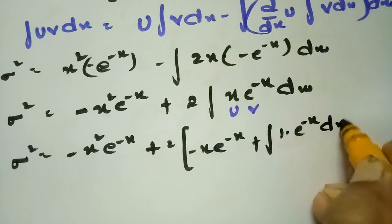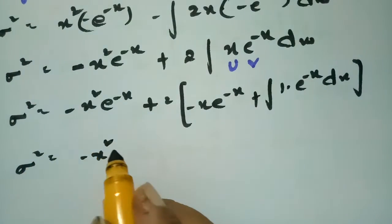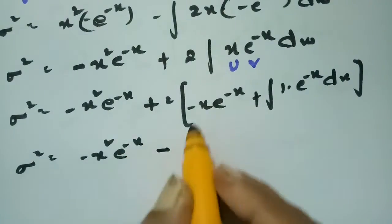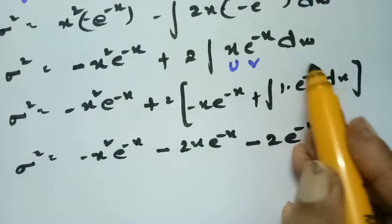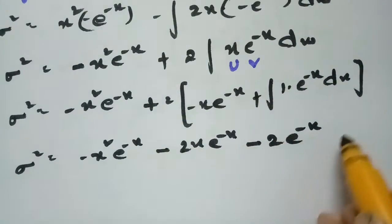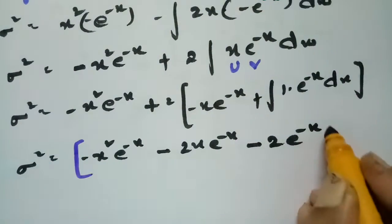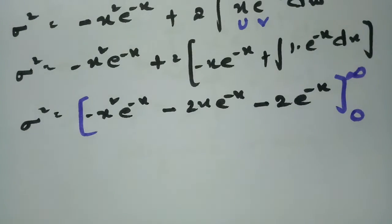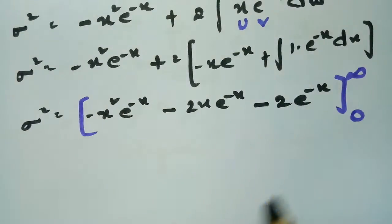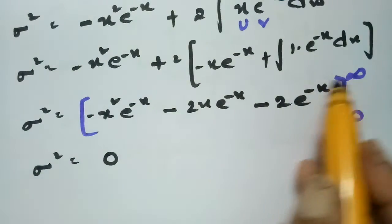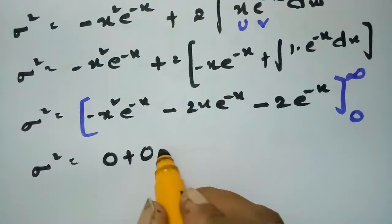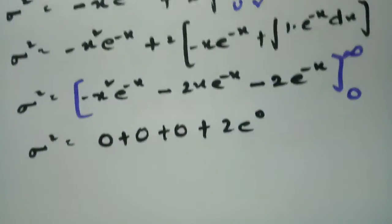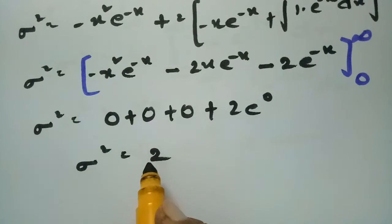Applying integration by parts again to x·e^(-x): sigma² = minus x²·e^(-x) + 2[x·(minus e^(-x)) minus (minus e^(-x))], which simplifies to minus x²·e^(-x) minus 2x·e^(-x) minus 2e^(-x), evaluated from 0 to infinity. At the upper limit infinity, e^(-infinity) = 0, so all terms vanish. At the lower limit 0, x = 0 gives 0 + 0 + 2·e^0 = 2. Therefore sigma² = 2.